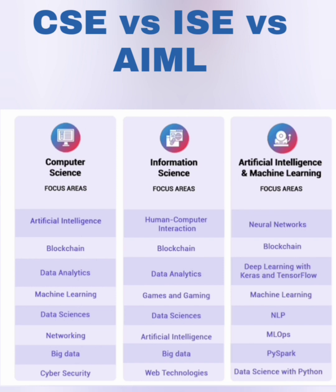In place of networking, information science has web technologies and application development as its focus area — application development and application maintenance. In AIML, what appears instead of traditional networking is neural networks and deep learning. Big data is present in computer science and information science, while in AIML the equivalent is deep learning with Keras and TensorFlow — almost similar skill sets overall.